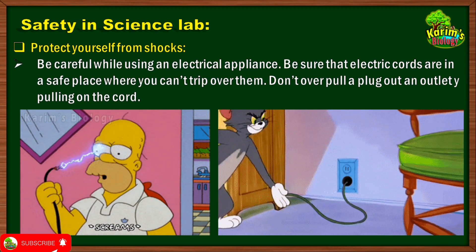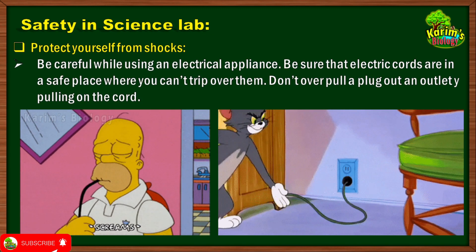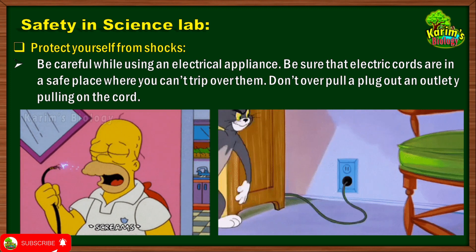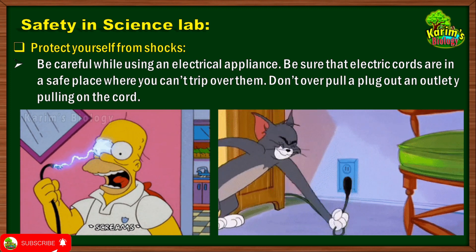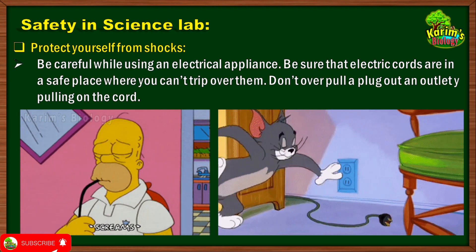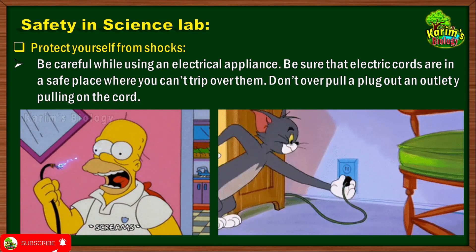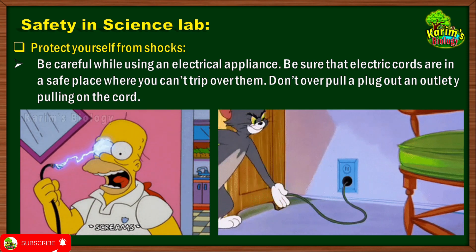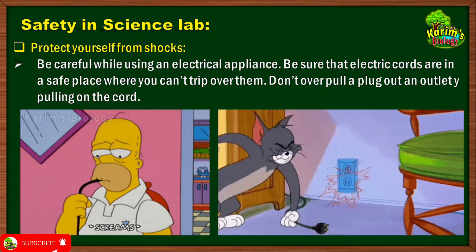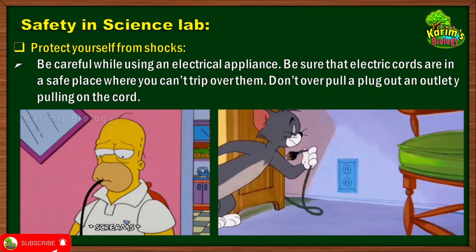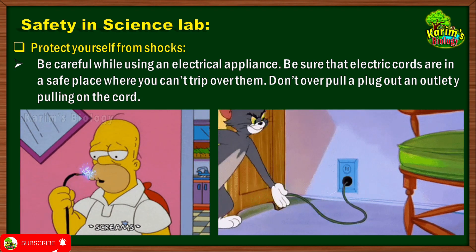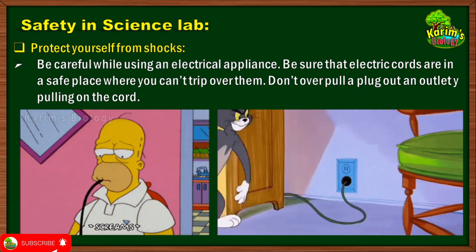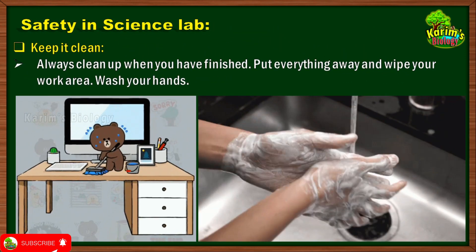The next safety precaution is: protect yourself from electrical shocks. Some apparatus in the science lab work by using electricity — for example, a centrifuge machine or an electronic weighing machine. You must be very careful when working with electrical appliances, especially at the plug socket. Without informing your teacher, you should not pull any electrical cord from the socket or pull any wire, as there is a chance you may get an electric shock.